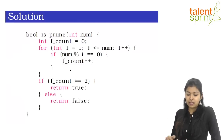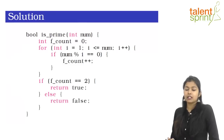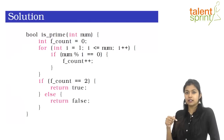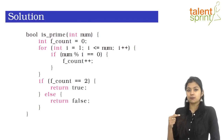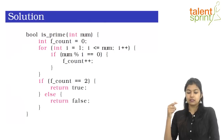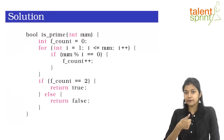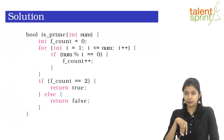Inside our function we have a variable called f_count. This variable is going to hold the number of factors of the current number. By the end of the program, if f_count equals 2 — meaning the number has just two factors, one and itself — the number is prime. If f_count is greater than 2, the number is not prime.